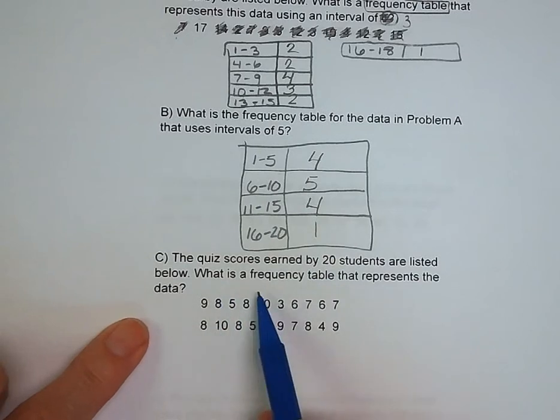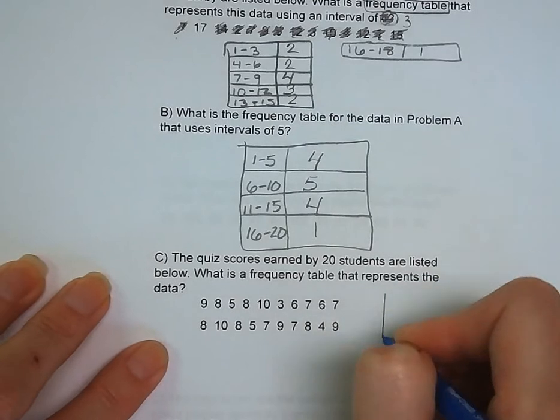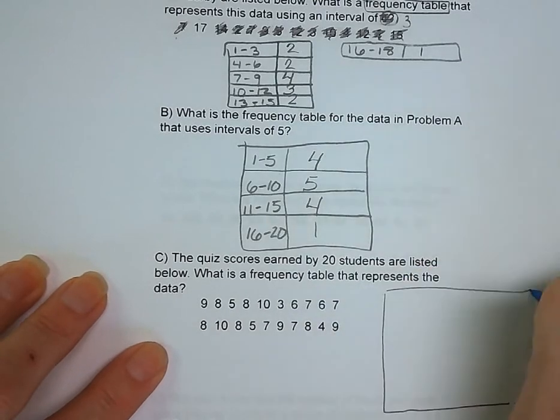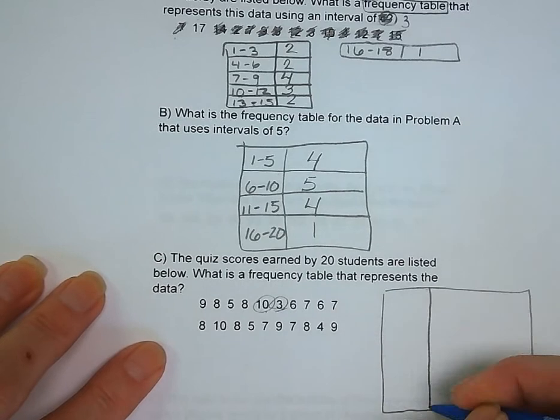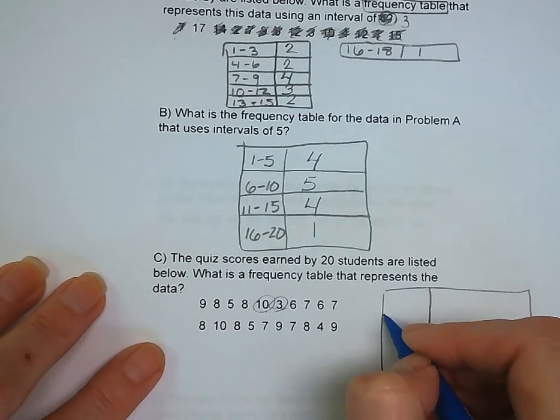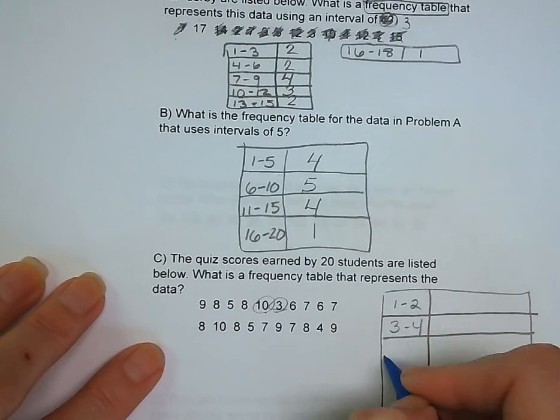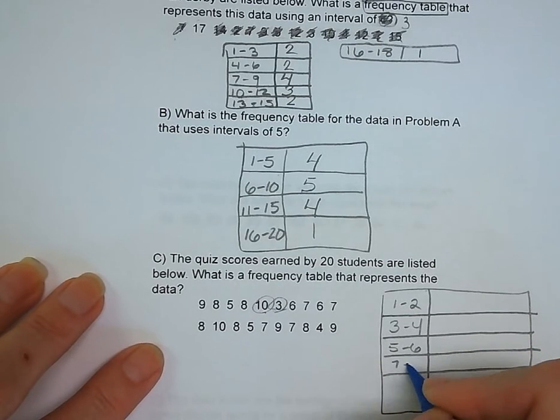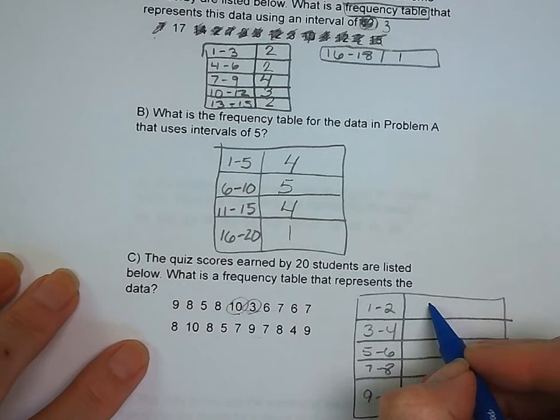Letter C. The quiz scores earned by 20 students are listed below. We want to find a frequency table that represents the data. Since our max score looks like it's 10, our minimum score is 3, we're just going to go 1 to 2, 3 to 4, 5 to 6, 7 to 8, 9 to 10.